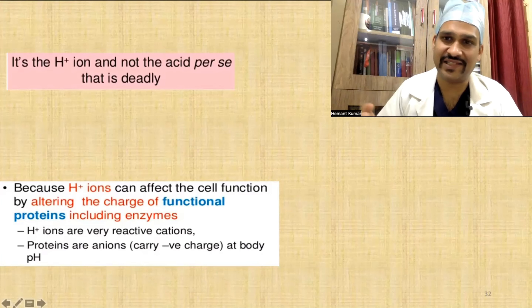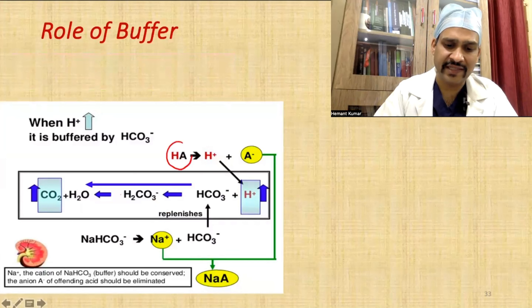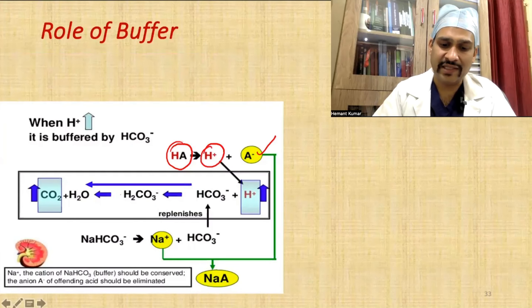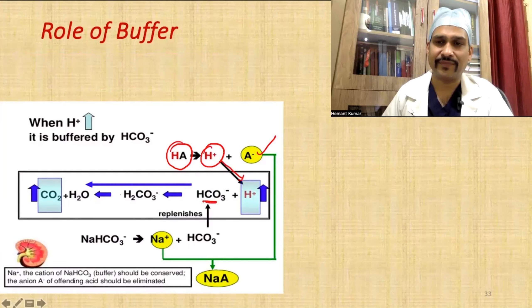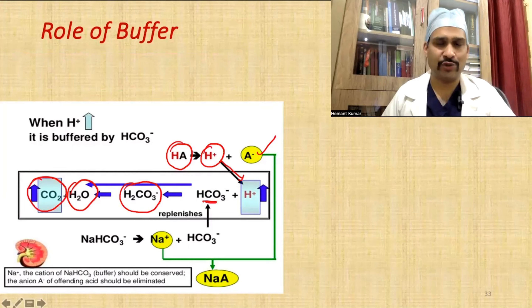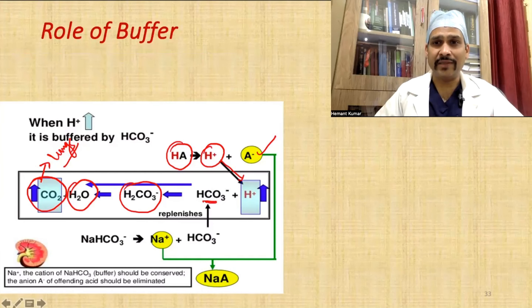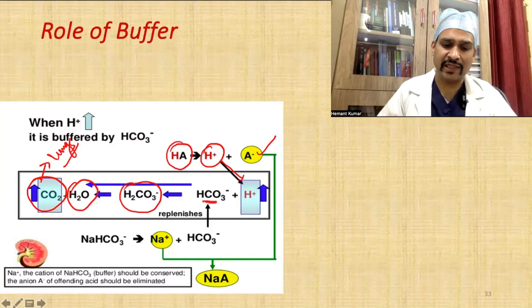Acid is harmful because of its H-ion. Now, the role of the buffer: when any acid enters the body, it dissociates into H-ion and anion. The H-ion reacts with bicarbonate, because bicarbonate is the most common buffer in our body. Combining with bicarbonate, it converts to carbonic acid, which then dissociates into H2O and carbon dioxide. The carbon dioxide is washed out by the lungs. This is how acid is neutralized by the buffer, and bicarb is replenished by the kidney.